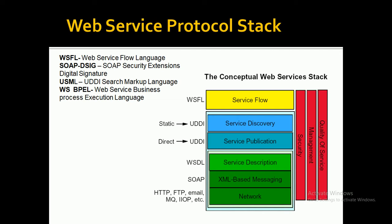The next protocol stack is the service description layer, also called the WSDL layer. This layer is responsible for describing the public interface to a specific web service — including the name of the service, where it is located, and the type of functionality offered. The protocol used for this purpose is WSDL, which stands for Web Service Description Language.